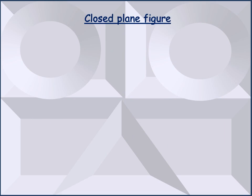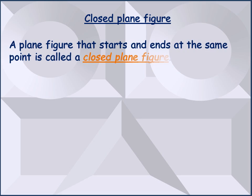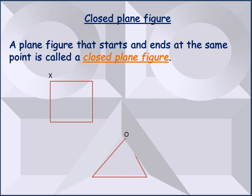After open plane figures, we learn what are closed plane figures. A plane figure which starts and ends at the same point is called a closed plane figure. For example, if we use straight lines to start a figure from the point X and end it at the point X again, then a closed plane figure is formed. In the second example, we have used straight lines to draw a closed plane figure which starts and ends at the point O. We can draw closed plane figures with curved lines also, as we have done in this example where we started drawing a curved line from the point M and ended it at the same point M.